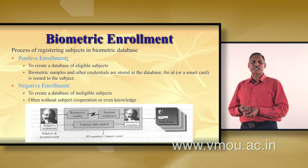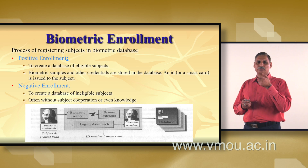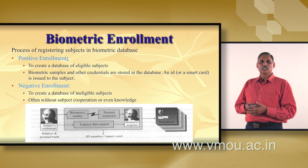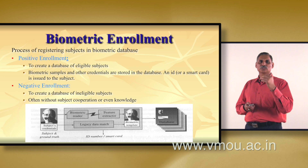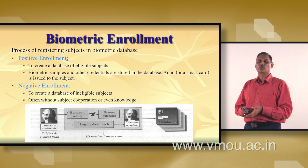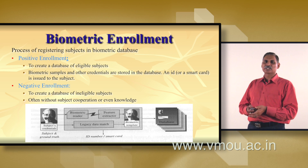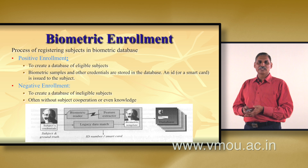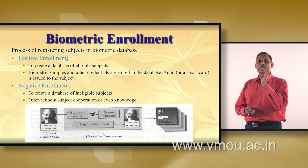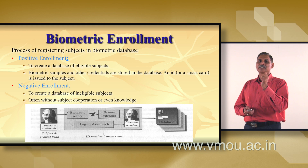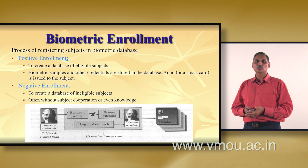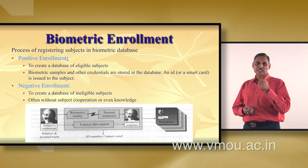Biometric enrollment is the process of registering subjects in the biometric system. Genuine users are always registered first. There are two types of enrollment: positive enrollment, which creates a database of eligible subjects whose biometric samples and credentials are stored for later verification; and negative enrollment, which creates a database of ineligible subjects — persons who should never gain access — so that by chance none of them can enter the system. Both types of enrollment minimize the chances of error.